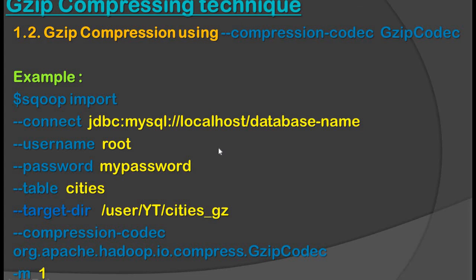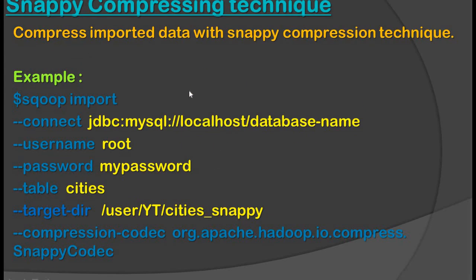Now let's see the snappy compression technique. In this example, we mention double hyphen compression hyphen codec space org.apache.hadoop.io.compress.SnappyCodec. When Sqoop executes this command, it compresses the output data using the snappy codec technique and the file extension will be dot snappy. The output file on the HDFS location will be cities_snappy.snappy. Snappy compression technique is very fast and compresses data very quickly.